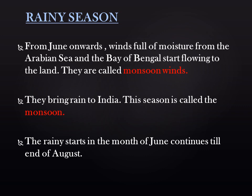From June onwards, winds from the Arabian Sea and Bay of Bengal start flowing to the land — they are called monsoon winds. These monsoon winds bring heavy rain to India. This season is called monsoon, which means rainy season. The rainy season starts in the month of June and continues till the end of August or start of September.